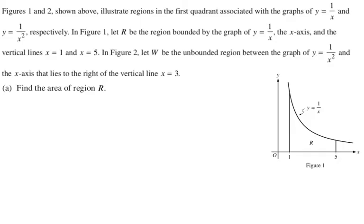Part A is to find the area of region R. So R is going to be our one over x curve, and we're going from one to five. We're just finding area, right? So that's going to be the integral from one to five of one over x dx.